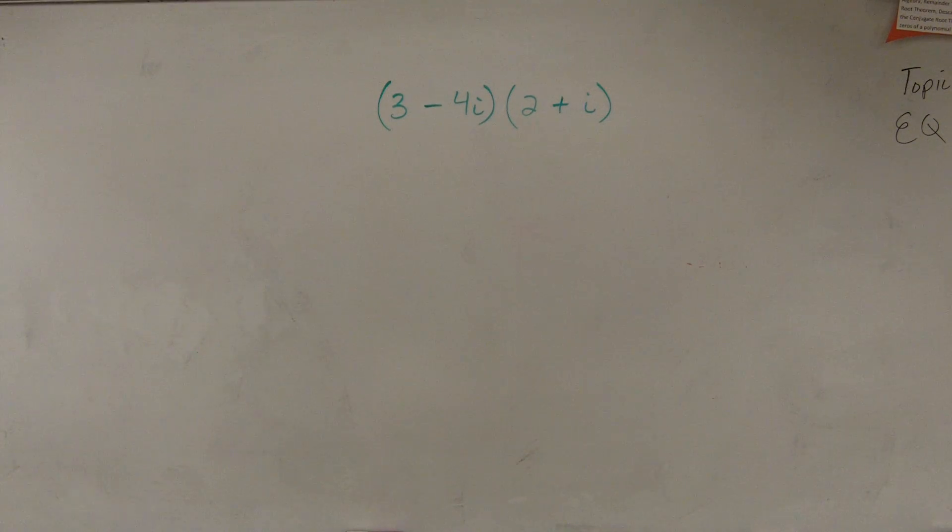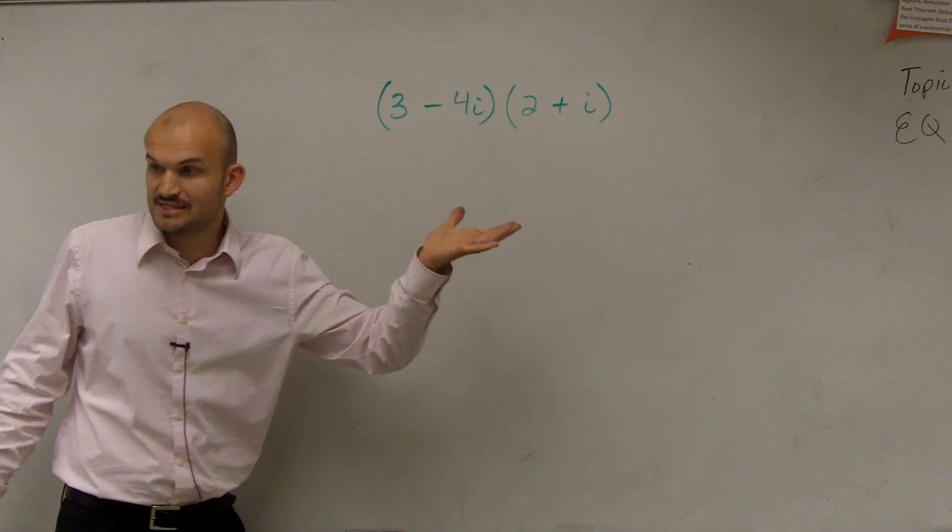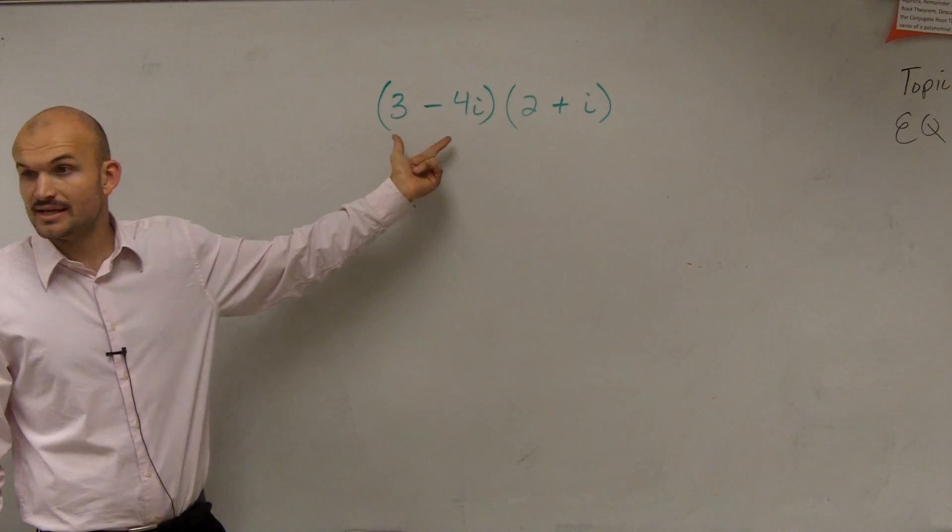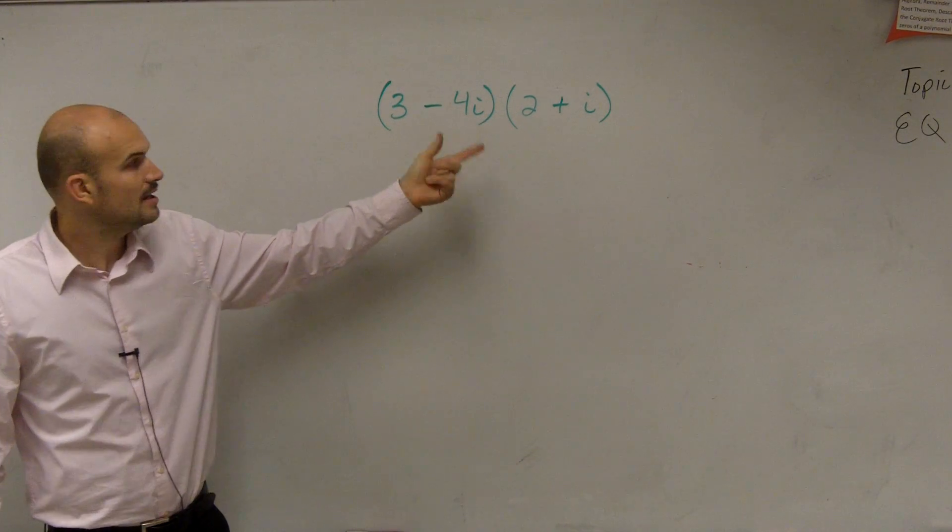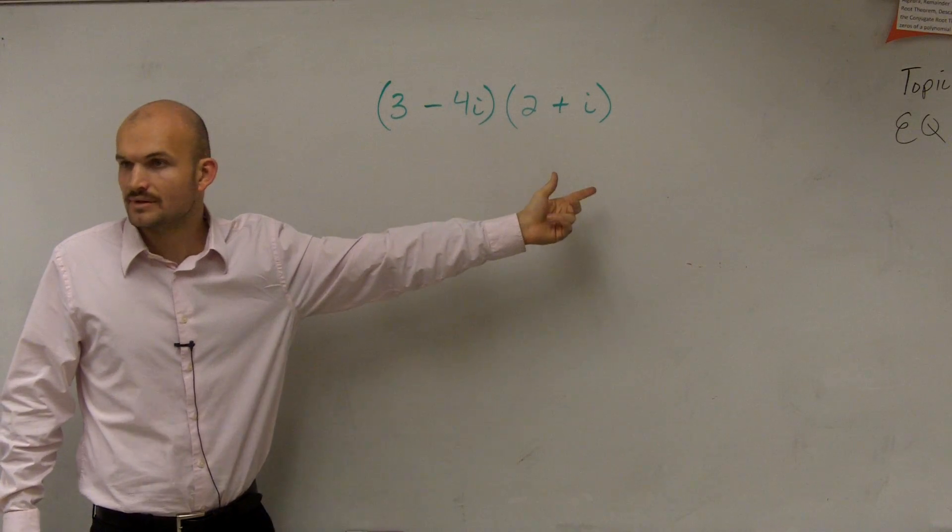What I have here, ladies and gentlemen, is a complex number. Is it in the form of a plus bi? Yes. And is this in the form of a plus bi? Yes. So I have a complex number times a complex number.